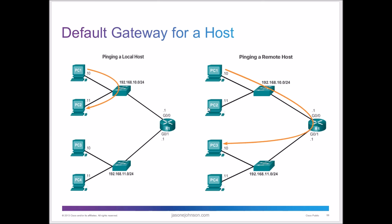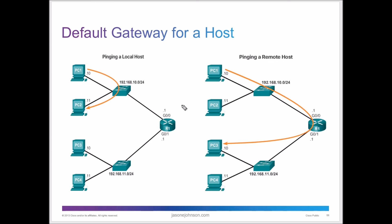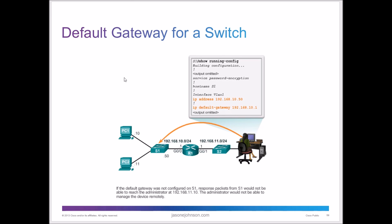You also need to configure a default gateway, which enables the routing process. When pinging a local host — for example, 10.x trying to reach 11.x — traffic can go directly through the switch without routing. But for a remote host, traffic must be routed through the default gateway. If a default gateway is not set on the switch, it won't know how to route that traffic, because a switch is not a router.